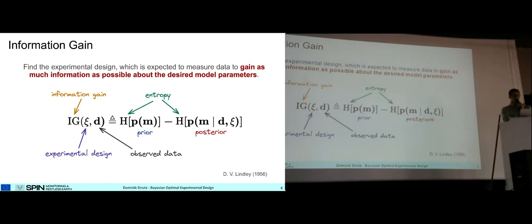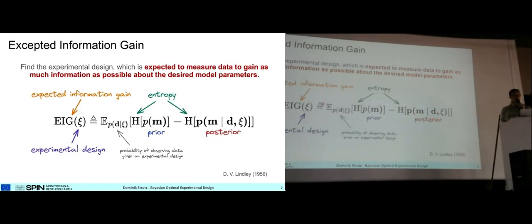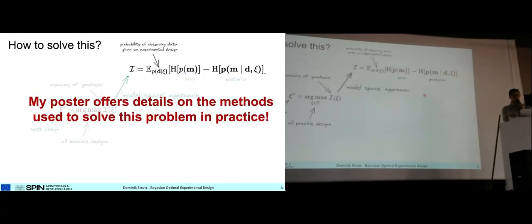So we need to make an expectation over all the possible data we could observe and make an expectation over this information gain. This expected information gain has the posterior in it. In most geophysical applications, calculating this posterior is a very challenging task, and doing this for a lot of data sets is in many cases just impossible.